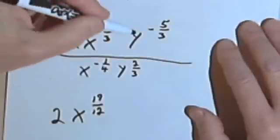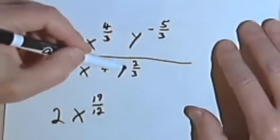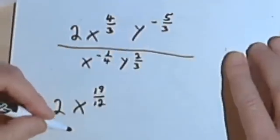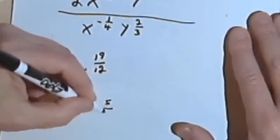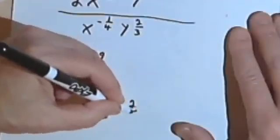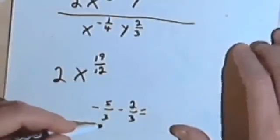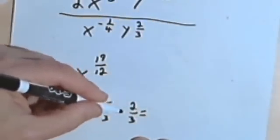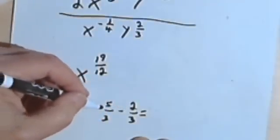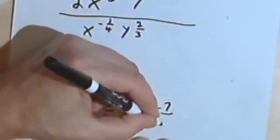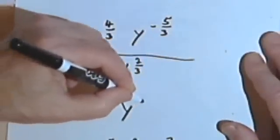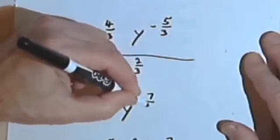Now I've got to deal with y to the negative 5/3 over y to the 2/3. I take negative 5/3 and subtract 2/3. Since they already have a common denominator, negative 5 minus 2 is negative 7, so this is negative 7/3. My y is going to be raised to the negative 7/3 power.